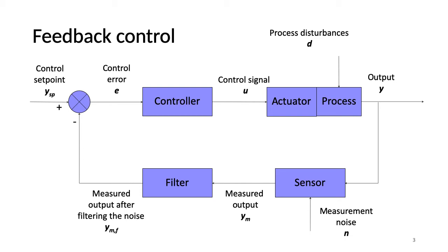The controller gives a control signal U to the actuator, connected to the process, in order to manipulate the process. The output variable Y is the variable that needs to be controlled. Process disturbances are non-controlled input variables acting on the process and influence its output. The measured output is the output from the sensor after measuring the process variable, and it contains measurement noise. The filter smooths out this random noise; otherwise noise can propagate to the control signal causing unnecessary process fluctuations.